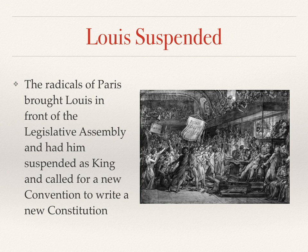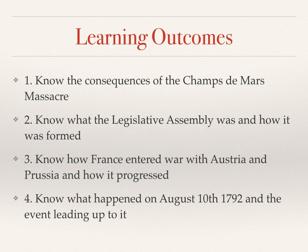In the next video, we will see how the violence escalates even further after this event. So that brings us to the end of our presentation. By now you should know the consequences of the Champs-de-Mars massacre, what the Legislative Assembly was and how it came into being, how France entered the war with Austria and Prussia and how it advanced, and what happened on August 10th 1792 and the events at the Tuileries. Thanks for watching.